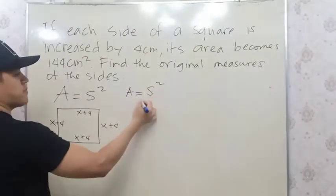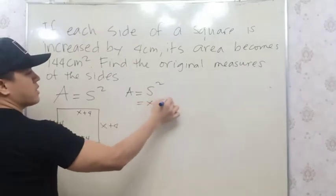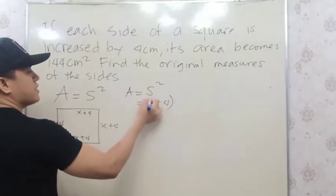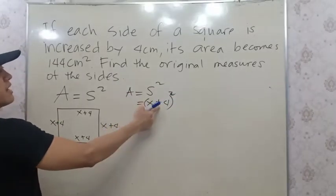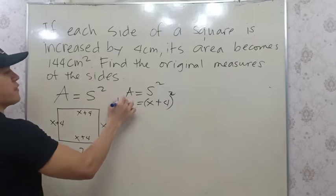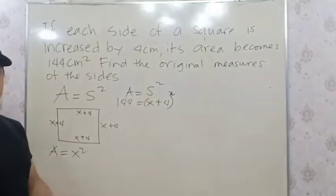Since the side now becomes X + 4, we have (X + 4)². And since the new area is 144 cm², we can set up our equation.